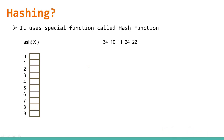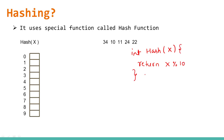Suppose you have a 10-size array. I have a hash function: hash(x), where x is your value, and it returns an integer. A very basic hash function would return x modulus 10. For example, suppose you want to insert 34. So x is 34, and 34 % 10 = 4, so we store 34 at index 4.